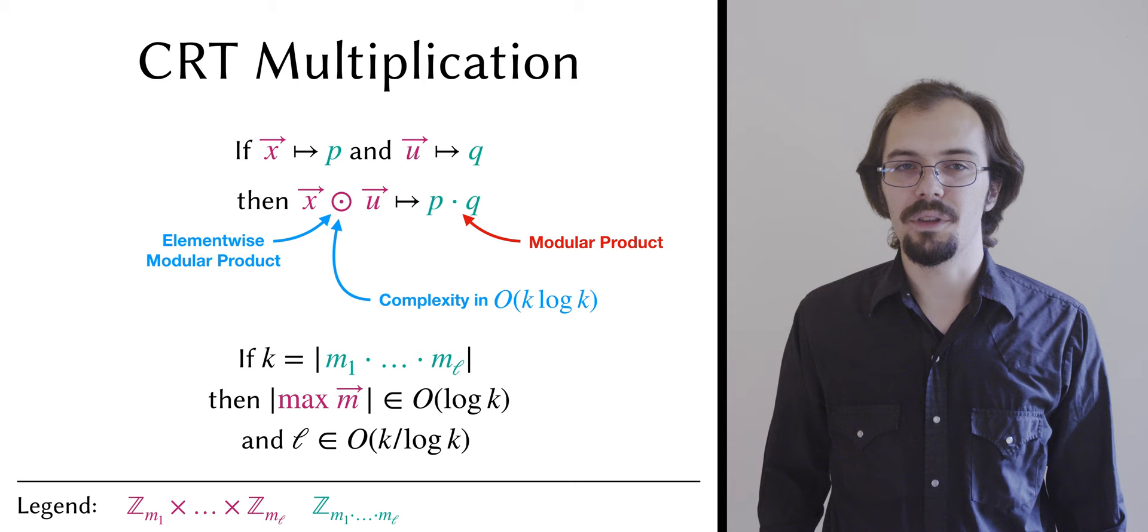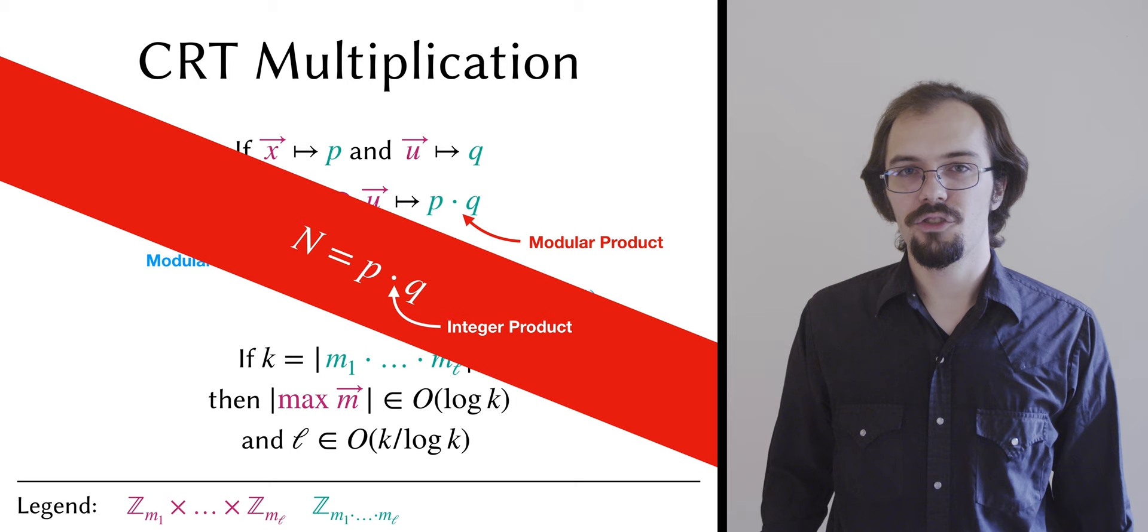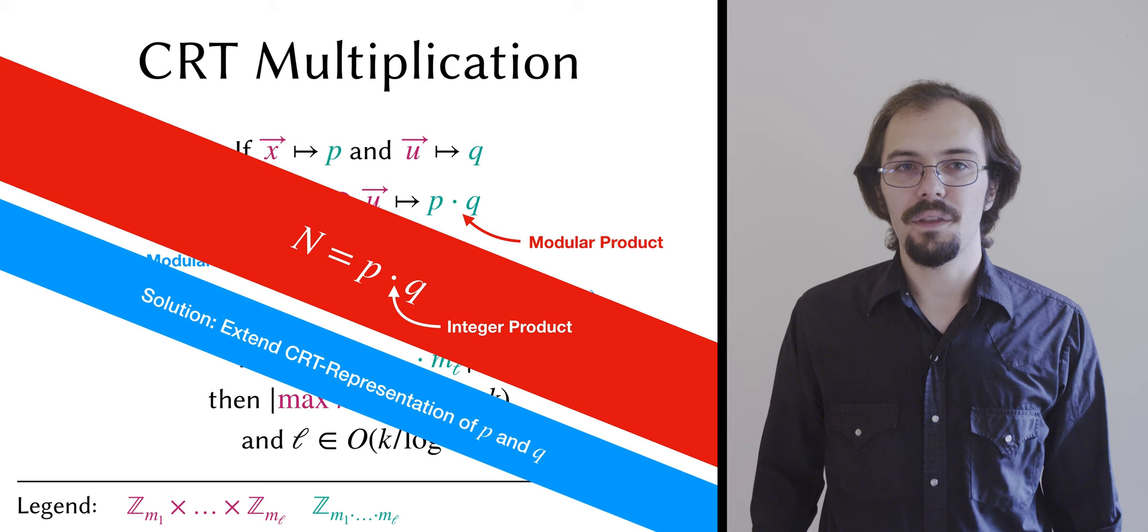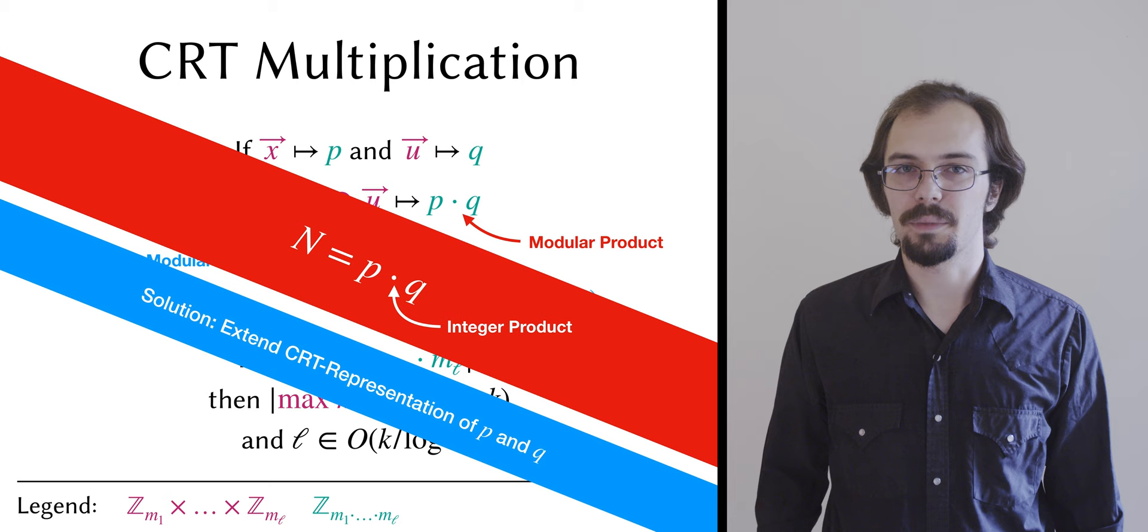This is not, however, a dead end. Fortunately, we can show that there is a way to expand a CRT representation to new prime fields without changing its semantic value. This allows us to enlarge the standard form ring to the point that there is no wrapping when a modular multiplication is performed, which makes the result equivalent to an integer multiplication.